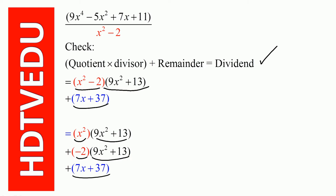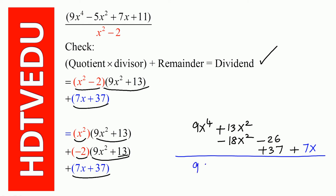x squared times 9x squared is 9x to the power of 4. x squared times 13 is 13x squared. Negative 2 times 9x squared is negative 18x squared. Negative 2 times positive 13 is negative 26. Then we have plus 7x and plus 37. So: 13 minus 18 gives minus 5x squared, and negative 26 plus 37 gives plus 11, plus 7x.